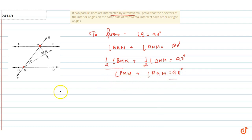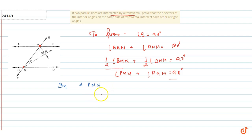We have a triangle PMN here. In triangle PMN, by the angle sum property of triangles, all angles sum to 180 degrees. So angle 1 plus angle 2 plus angle 3 equals 180 degrees.